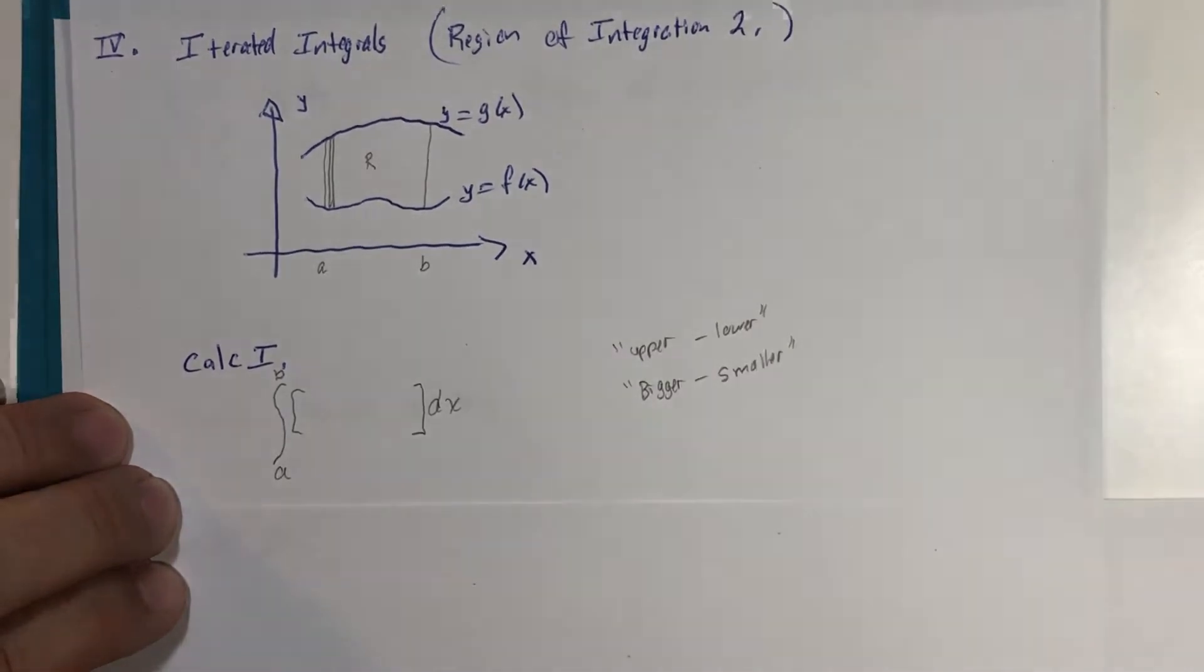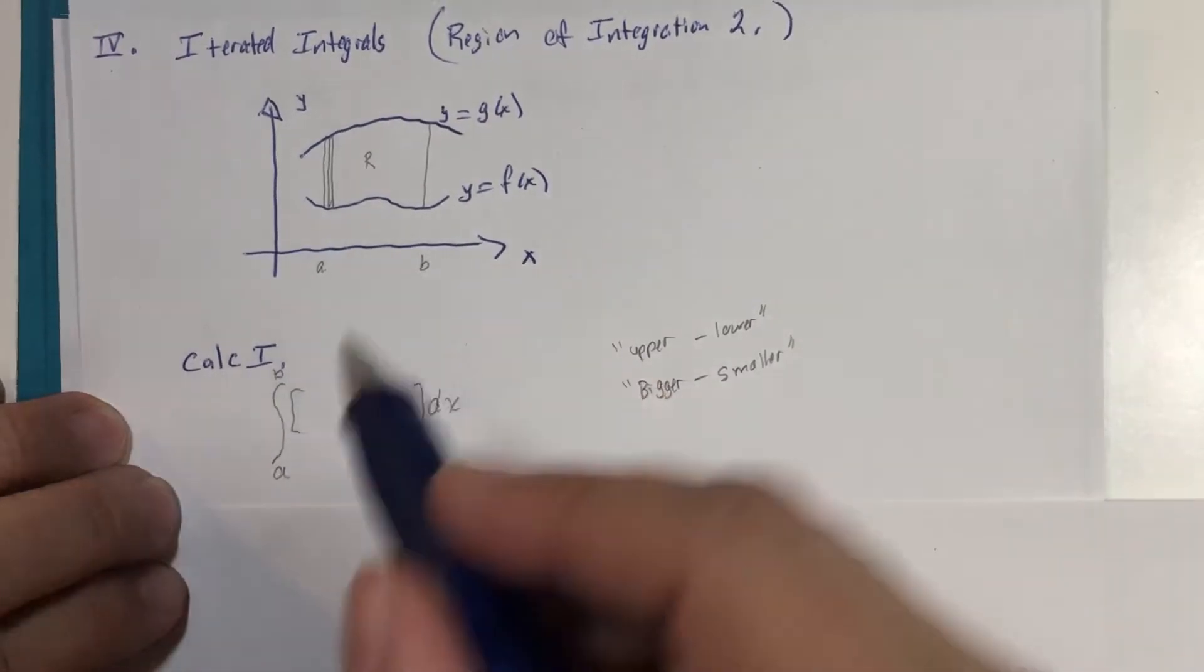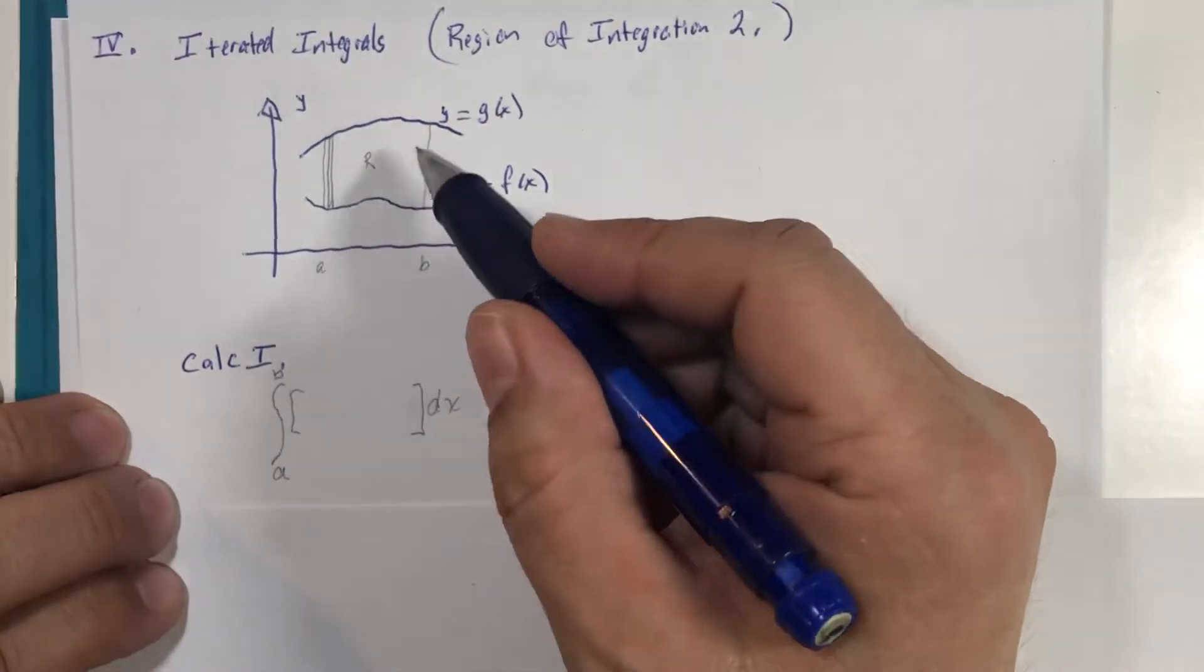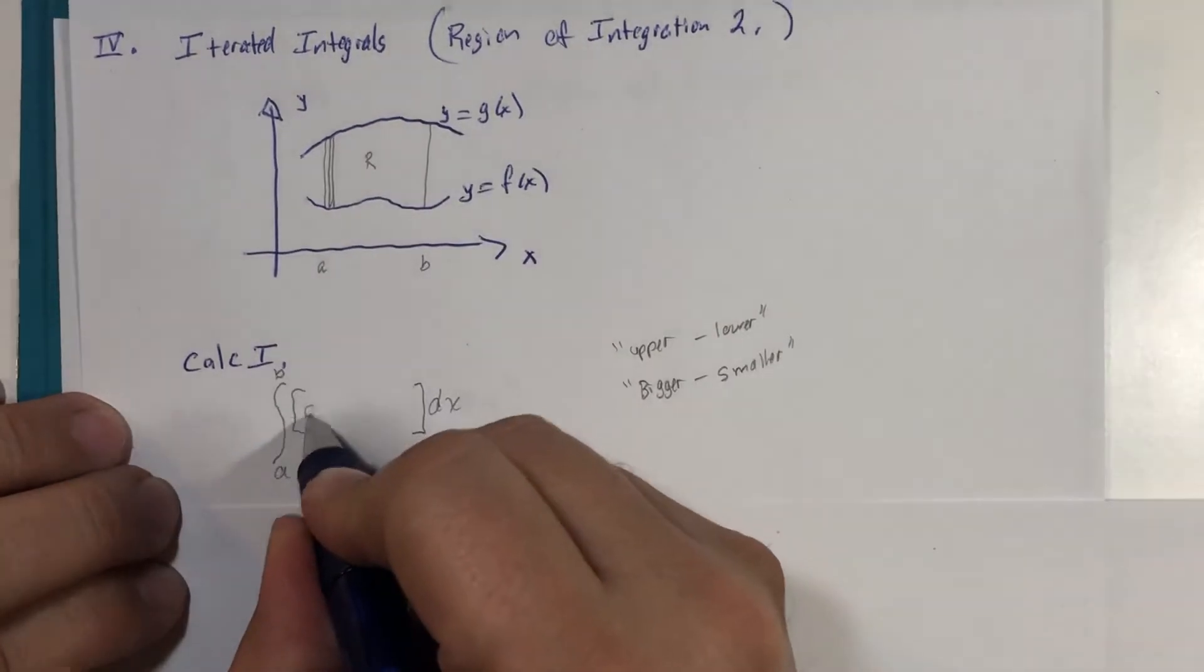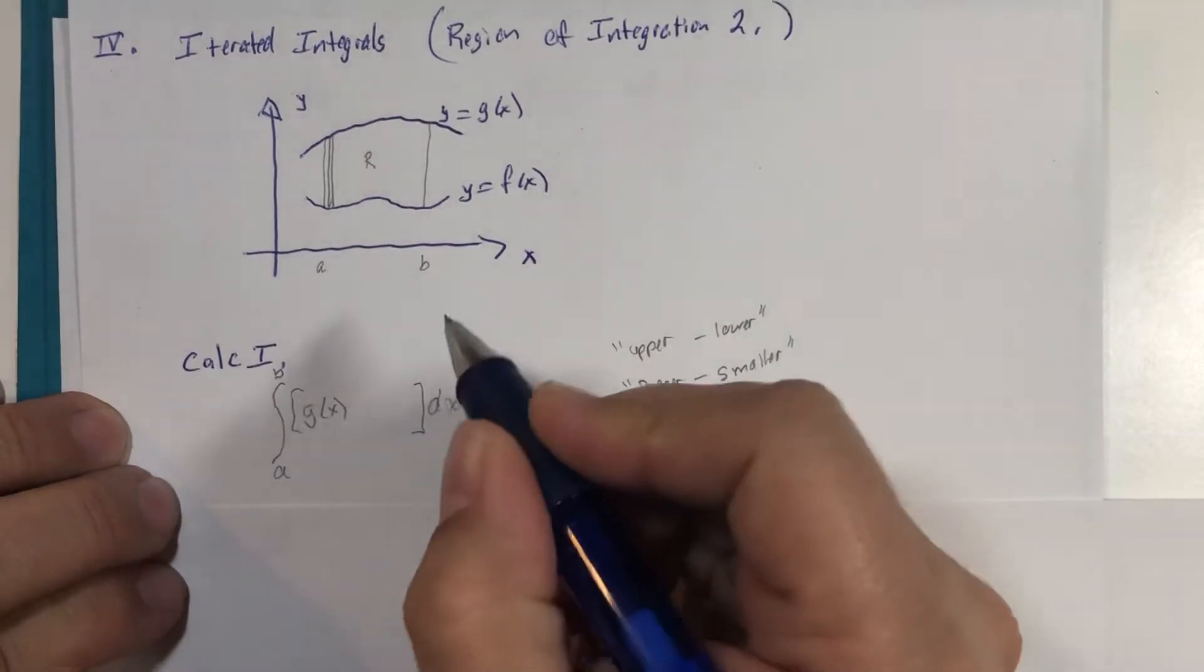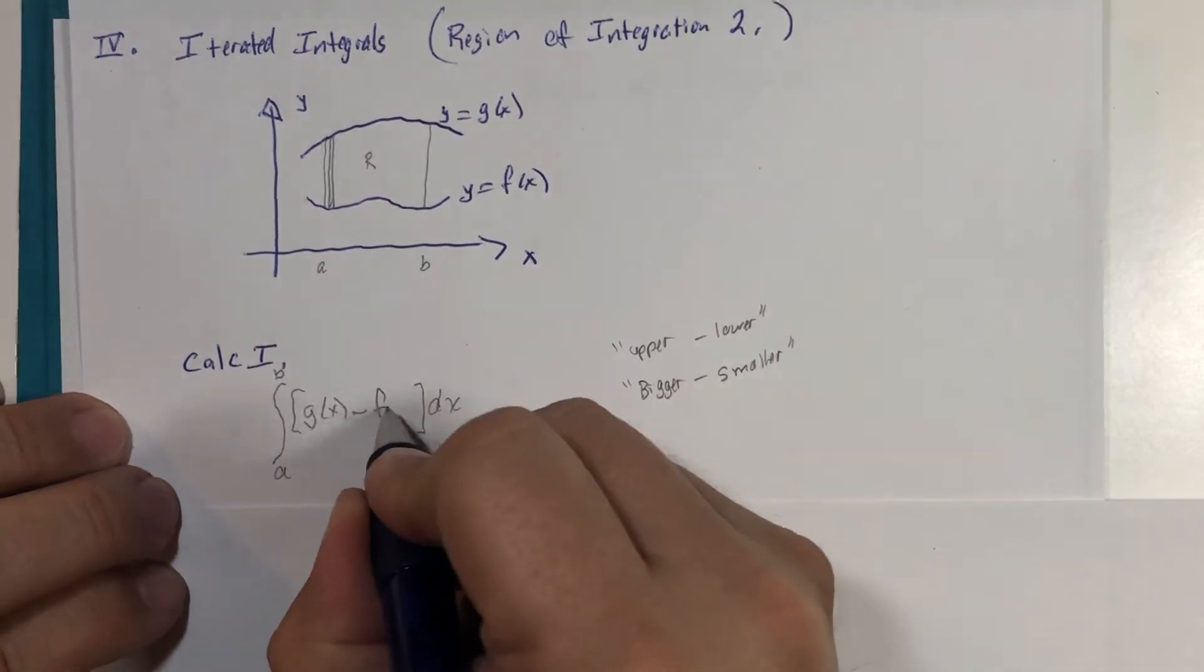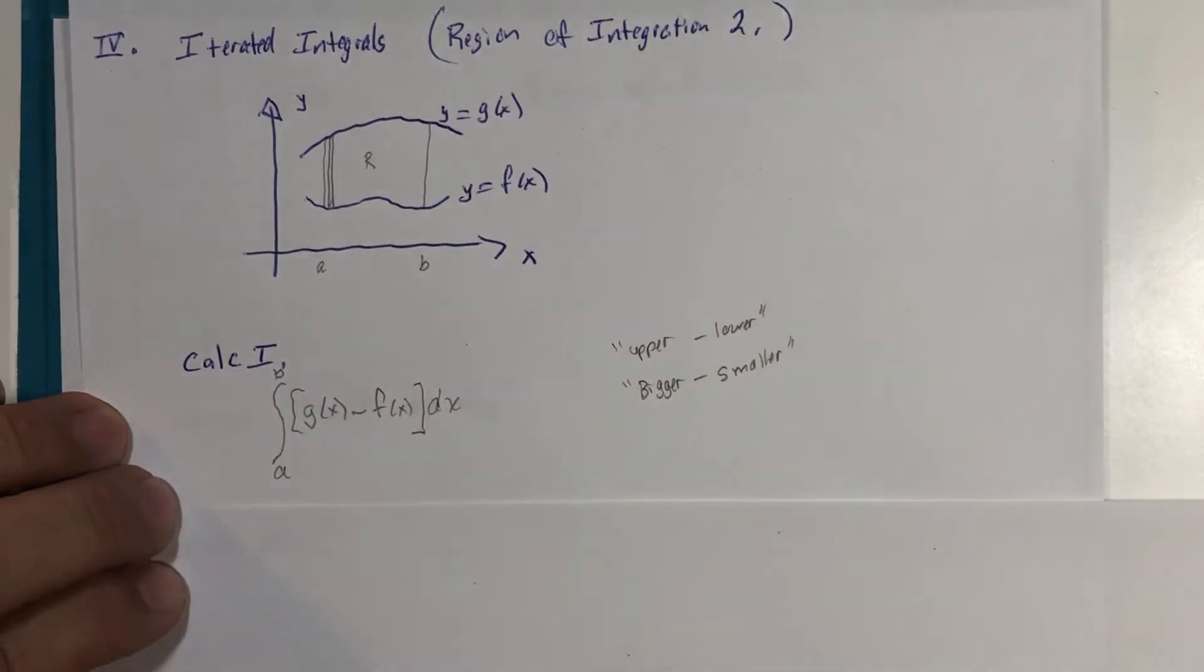I'll come back to y in just a second here. The upper function or the larger y values is g of x and the lower function, smaller y values, is f of x, and we do that subtraction.